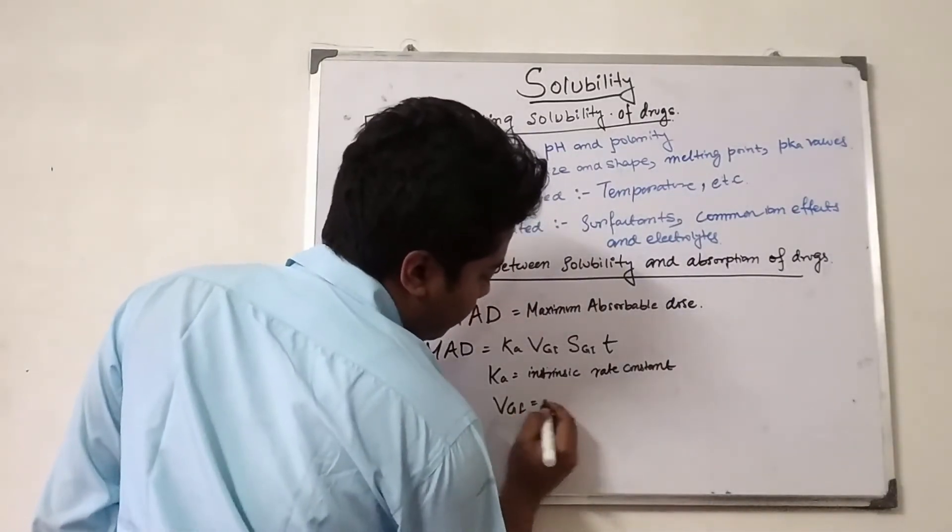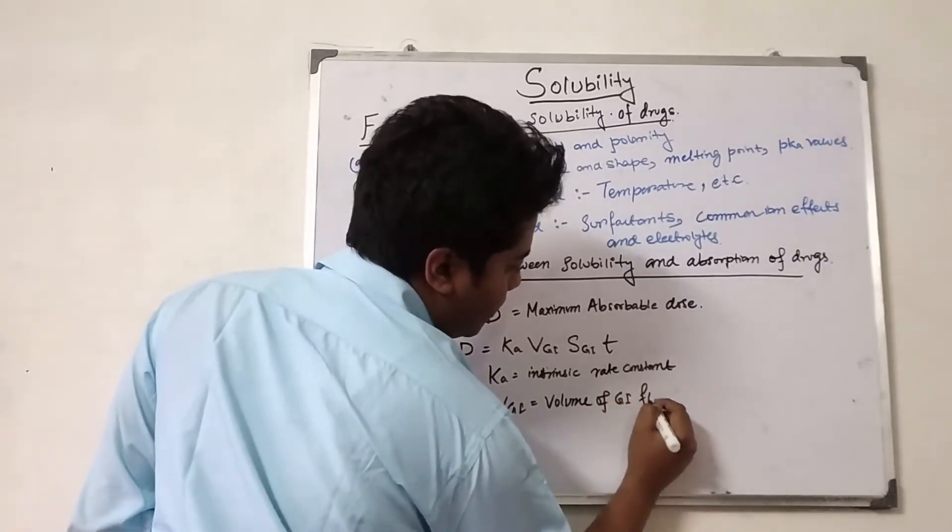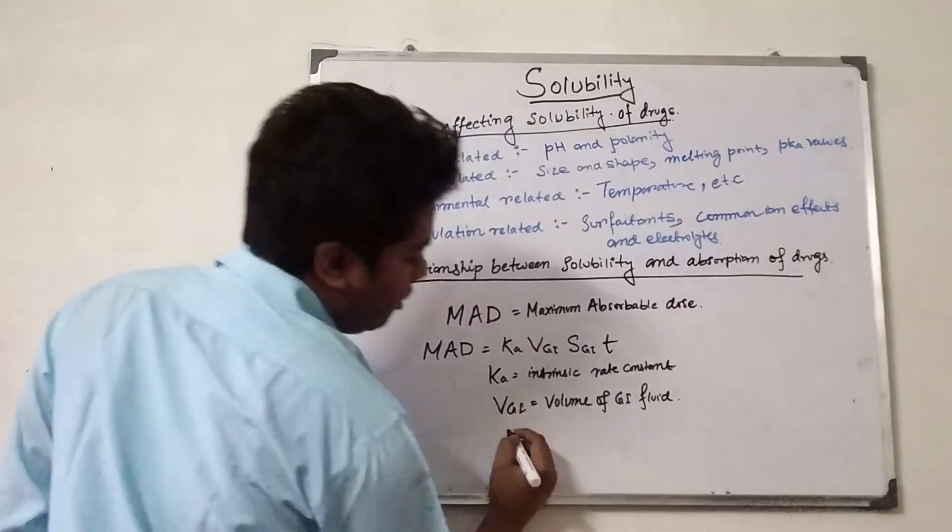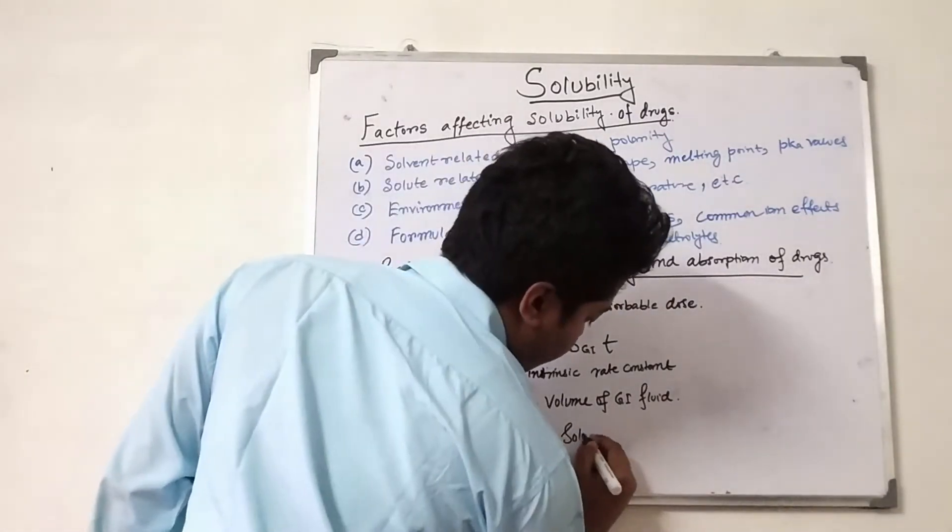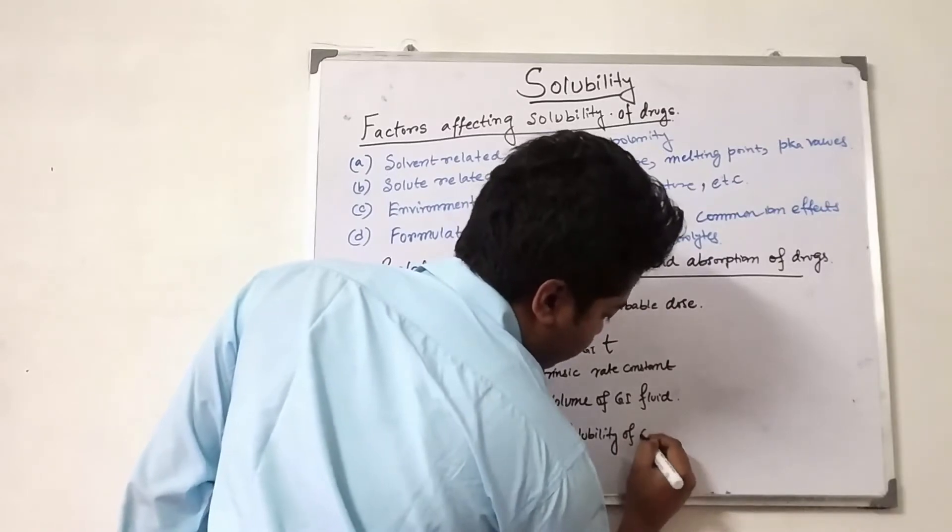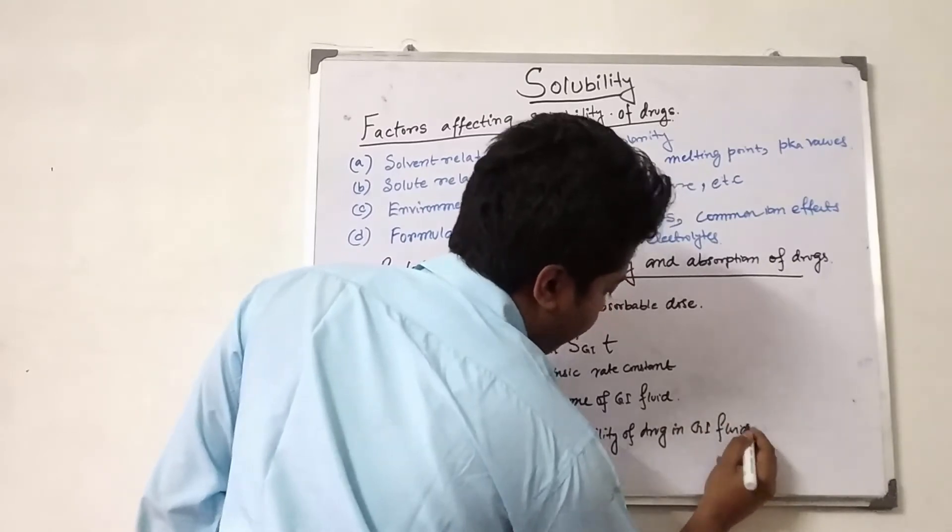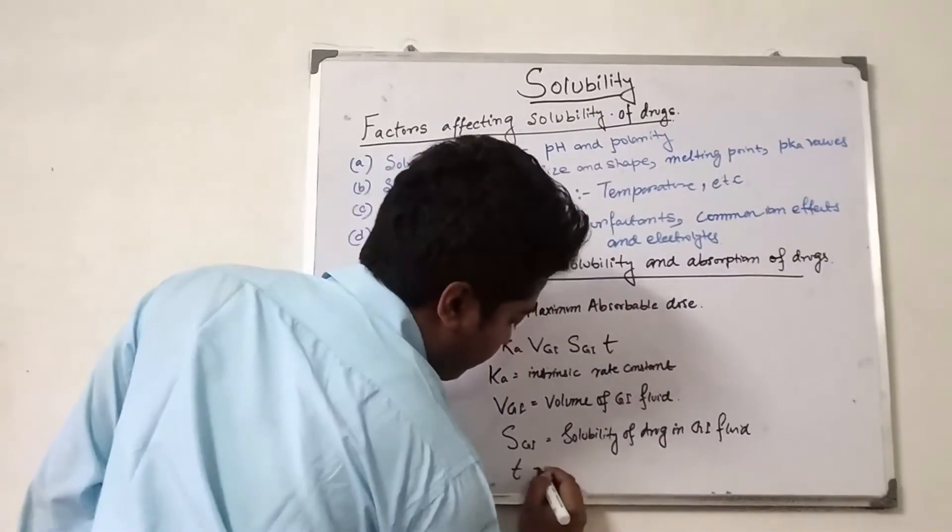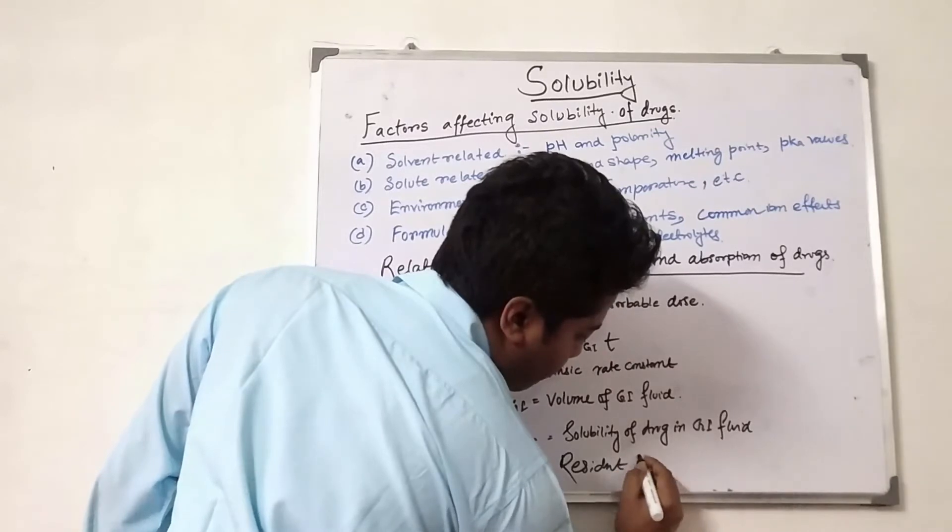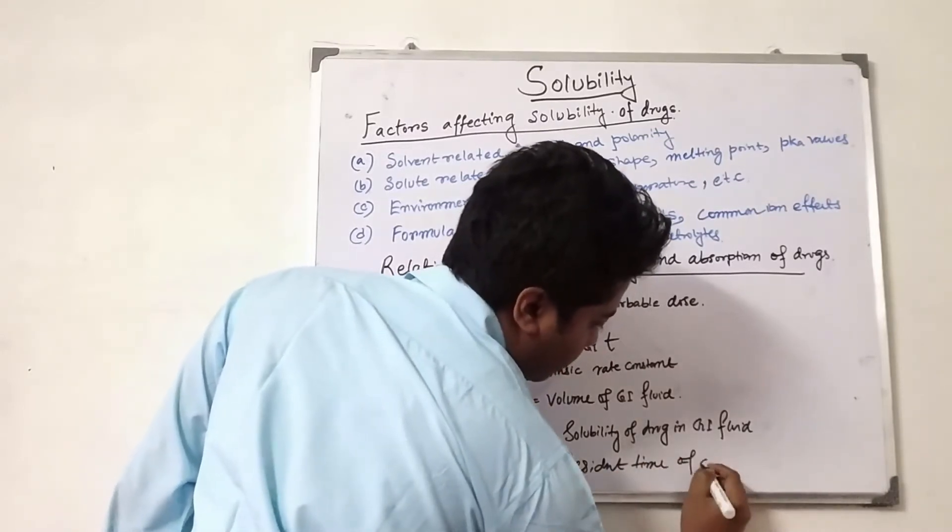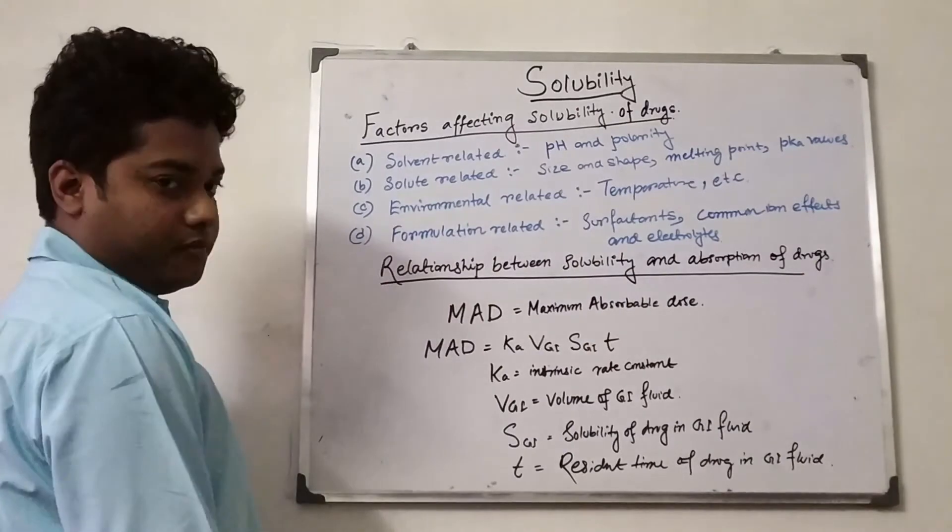Vgi is the volume of GIT fluid. T equals the time of drug, the residence time of drugs in GIT fluid.